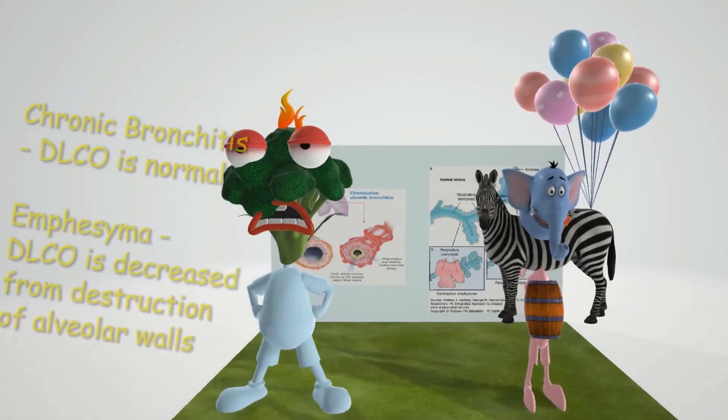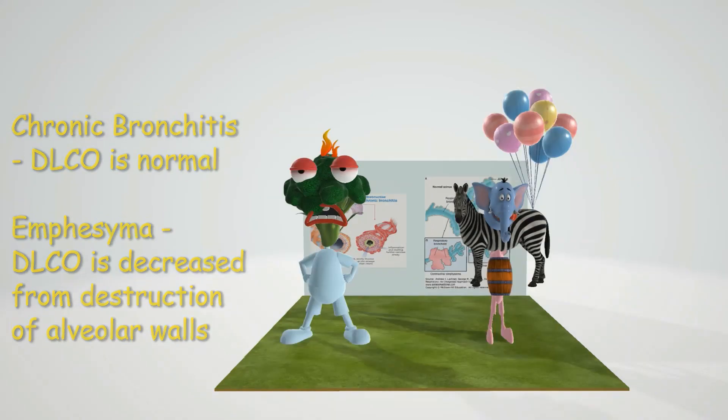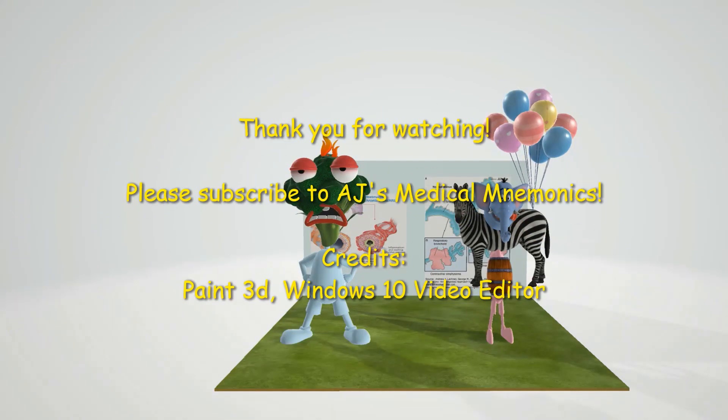A final point is that the DLCO is usually normal in chronic bronchitis, whereas it is decreased in emphysema due to the destruction of alveolar walls. That covers this scene on chronic bronchitis — take care.